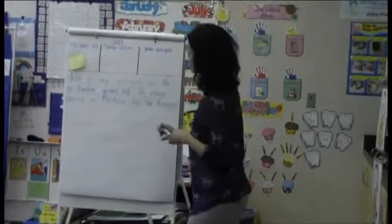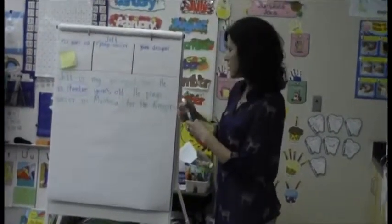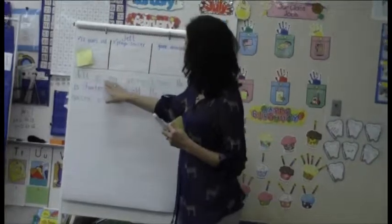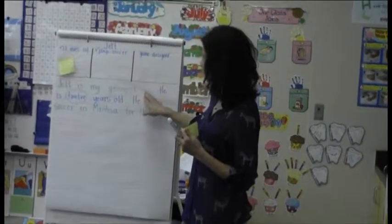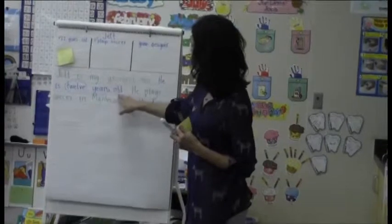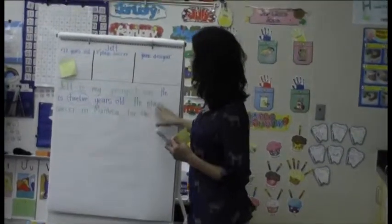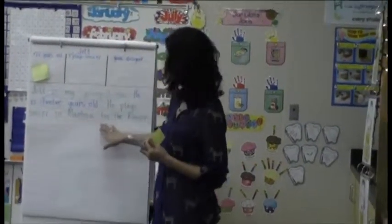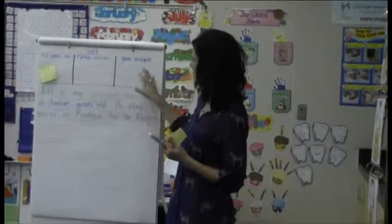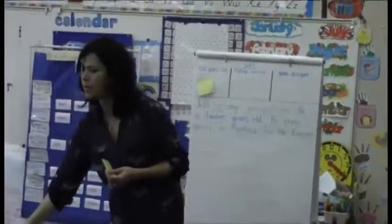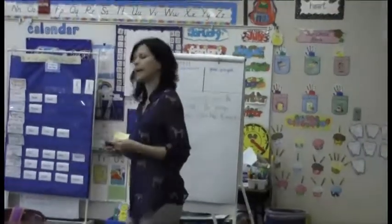So I have my 'play soccer' detail. Let me go back and read here — you can read it with me if you want. Jet is my youngest son. He is 12 years old. He plays soccer in Manitica for the Rangers. Now my last detail I'm going to turn into a sentence is that when he grows up, he wants to be a game designer.